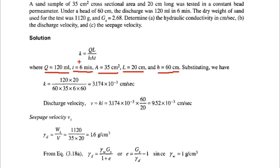Substituting these values into the formula k = qL / (h × A × t): q = 120, L = 20, h = 60, area = 35, and time = 6 minutes converted to seconds = 6 × 60. The answer for hydraulic conductivity k is 3.174 × 10⁻³ cm per second.